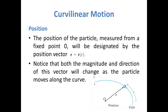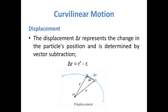From a fixed point O, the position of a particle will be designated by the position vector R. Notice that both the magnitude and direction of this vector will change as the particle moves along the curve. The displacement delta-r represents the change in the particle's position and is determined by vector subtraction — to find the displacement, we subtract the initial position vector from the final position vector.